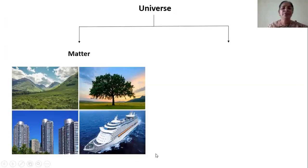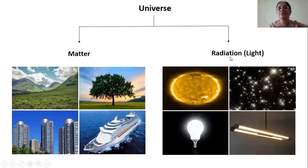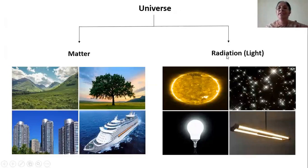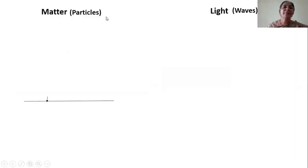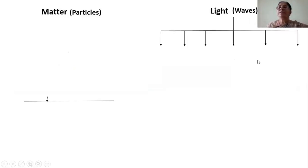The other form is radiation. The entire universe can exist in two forms: one is matter, another one is radiation. The sun, the stars, the light from the fluorescent lamp or the tube light — these are radiations. Matter is made up of particles, and light is in the form of waves.